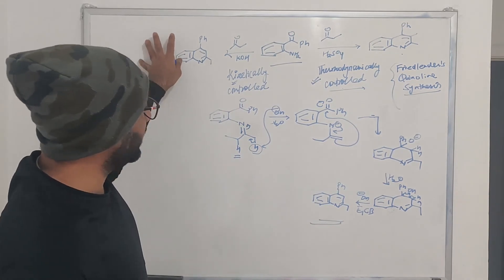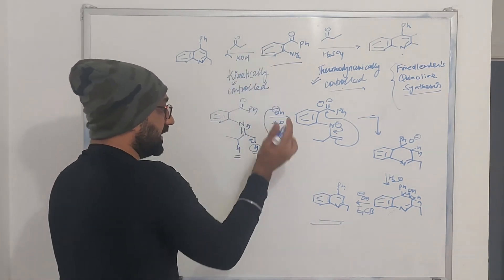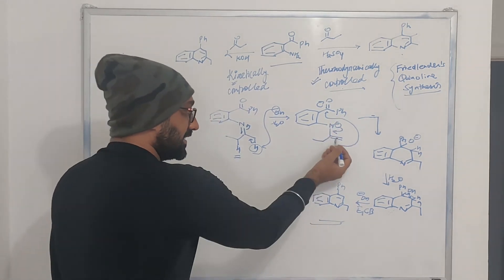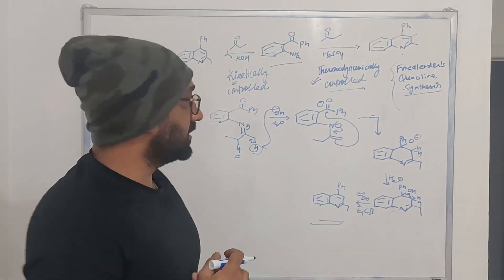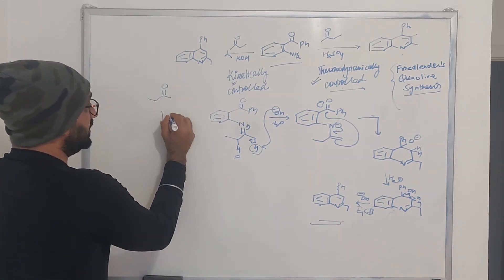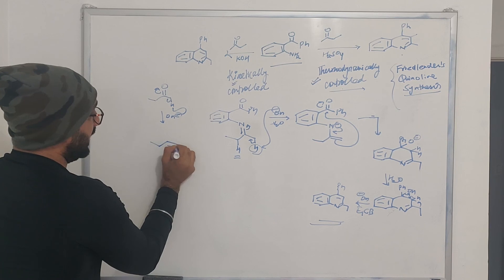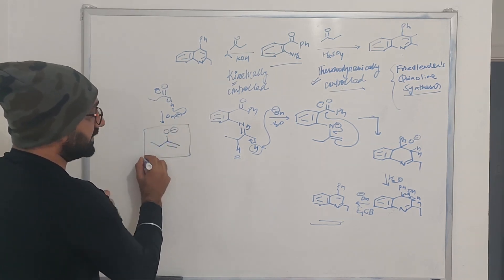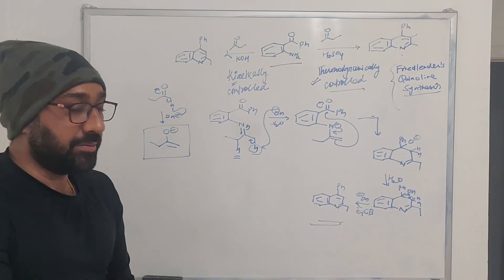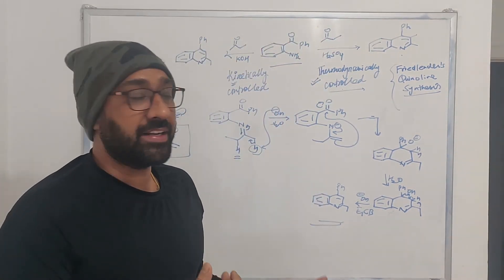So this is how this particular reaction takes place. The important takeaway is: under basic conditions, it is the least substituted enamine — or least substituted double bond — that is formed. Under basic conditions, the hydrogen that is abstracted gives the kinetically controlled enolate. This kinetically controlled enolate attacks in an aldol fashion, followed by imine formation. These are two different mechanisms depending on the conditions.